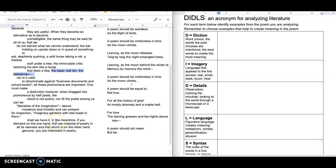She goes on to say, nor is it valid to discriminate against business documents and school books. And so now she's saying that poetry is not a whole lot different than business documents and school books. All these phenomena are important. One must make a distinction, however, when dragged into prominence. Prominence is a pretty high-sounding word. It means importance by half poets. And she's saying the problem is we get drawn into poetry by people who aren't really poets. And when that happens, the result is not poetry.